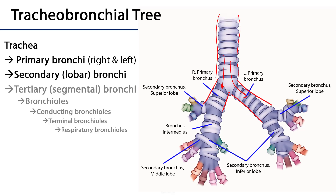Each primary bronchus divides into several secondary bronchi. The right main stem bronchus divides into ultimately three secondary bronchi; the left into two. These secondary bronchi are known as lobar bronchi because they supply lobes of the lungs. On the right we have the superior, middle, and inferior secondary bronchi. Between the primary bronchus and the middle and inferior secondary bronchi there is the bronchus intermedius. On the left side we have a superior and an inferior secondary bronchus.